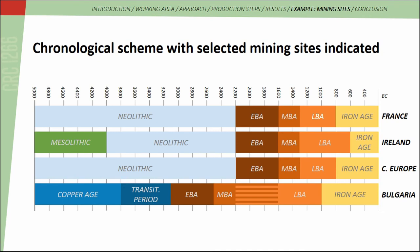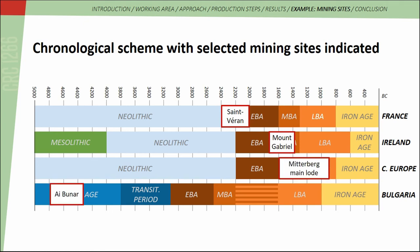It is possible to use estimations of copper output from different mining sites. I selected some mining sites for which such estimations were available. Because only few estimations are available from the working area, sites from neighboring European regions were also included. This chronological scheme shows the dating of the selected mining sites: Saint-Véran in France, Mount Gabriel in Ireland, the Mitterberg region in Austria, and Aibunar in Bulgaria. Most of them fall into the time frame of the Central European Bronze Age, with the exception of Aibunar.